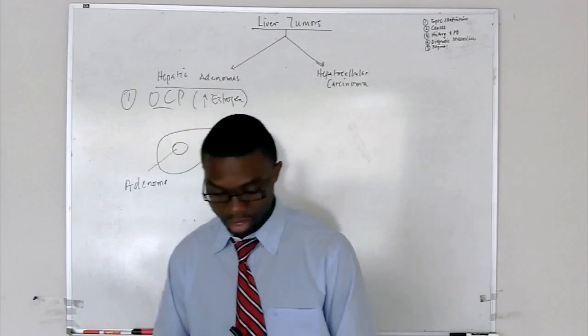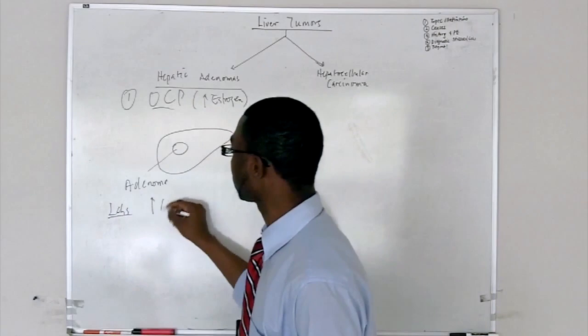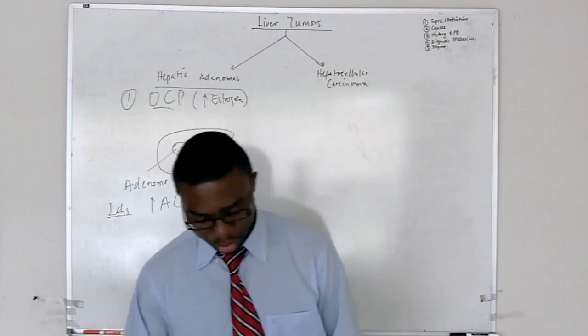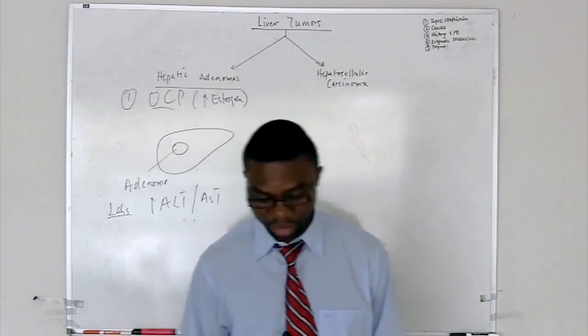So, usually the labs, labs wise, elevation in ALT and AST. So, you want to take a note of that. And also the GGT might also be elevated. Usually, this is common in middle-aged women and usually associated with a lot of androgen use, pregnancy, diabetes, also glycogen storage diseases.